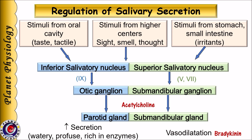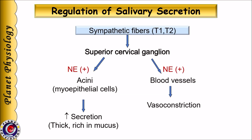Acetylcholine released by the postganglionic parasympathetic fibers stimulates the salivary gland to release a copious amount of watery secretion rich in enzymes. Kallikrein from saliva acts as an enzyme to form bradykinin, which leads to vasodilation and an increase in blood flow to the salivary gland, which is necessary to support the increased secretion.